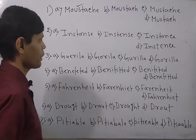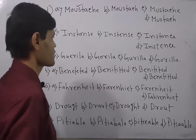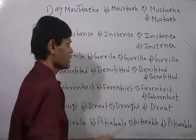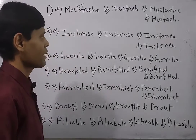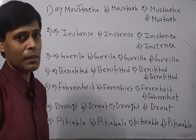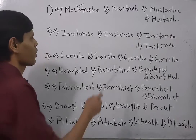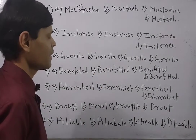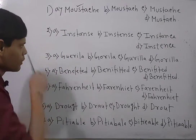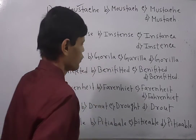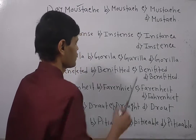Now look at the next question — the word is INSTANCE. First option is I-N-S-T-A-N-A-C, second is I-N-S-T-E-N-A-C-E, third is I-N-S-T-A-N-C-E, fourth is I-N-S-T-A-N-C-E-S-E. Instance means example, and the correct spelling is I-N-S-T-A-N-C-E. The first, second, and fourth options are eliminated, and option C is the answer.